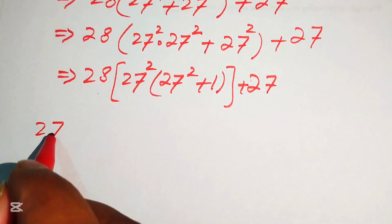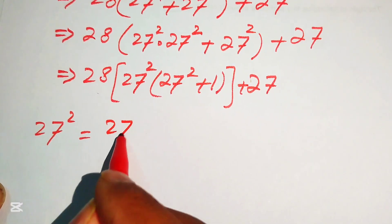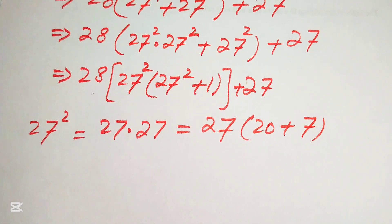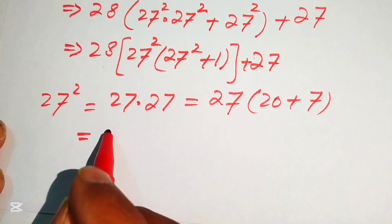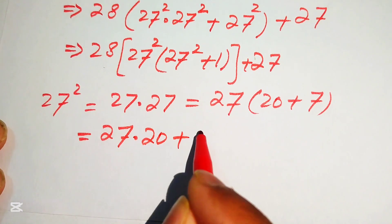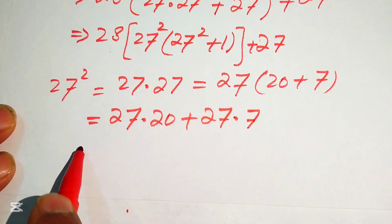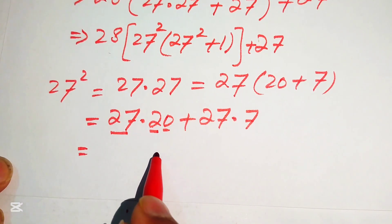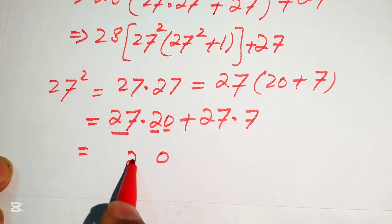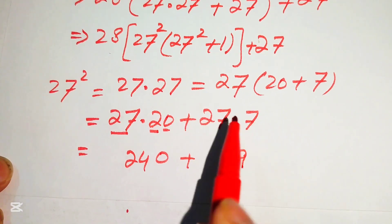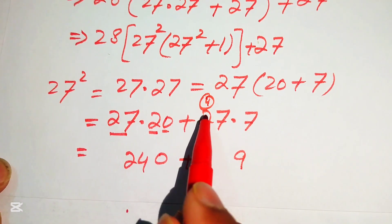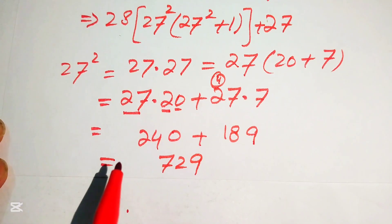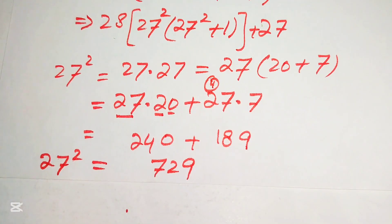Now we need to find the value of 27 squared. 27 squared means 27 multiplied by 27. We break 27 as 20 plus 7, and multiply 27 by both values: 27 times 20 plus 27 times 7. 27 times 20 is 540. For 27 times 7: 7 times 7 is 49, write 9 carry 4; 7 times 2 is 14, plus 4 is 18, giving 189. Then 540 plus 189 equals 729, so 27 squared equals 729.